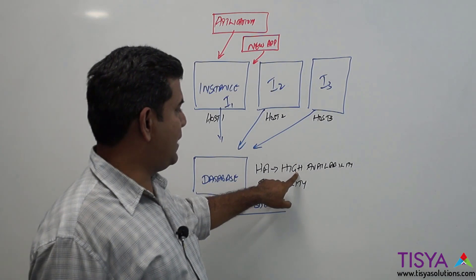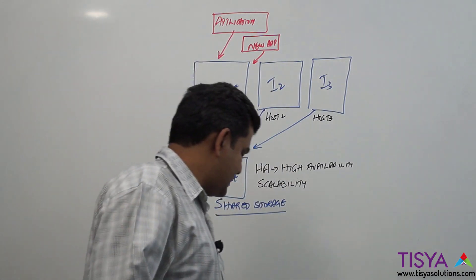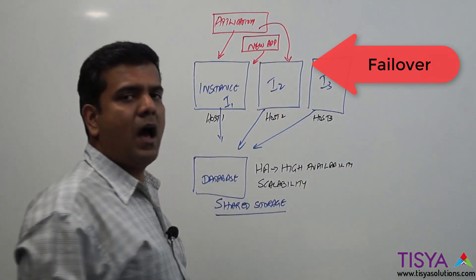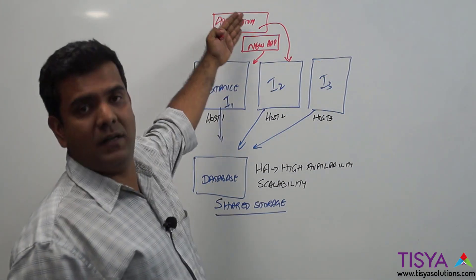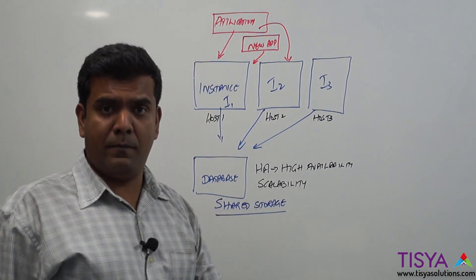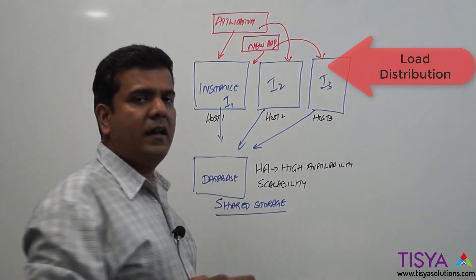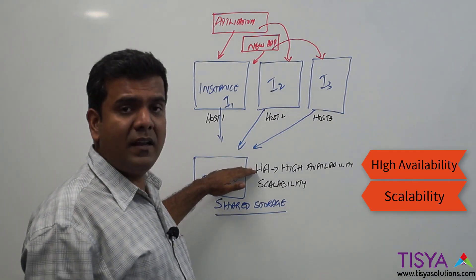In case this instance goes down, my application can establish connectivity to the same database by connecting to another instance. Or if I want to look at scalability where I want more load to be processed, I can look at my new application connecting to an additional instance. So I achieve high availability as well as scalability.